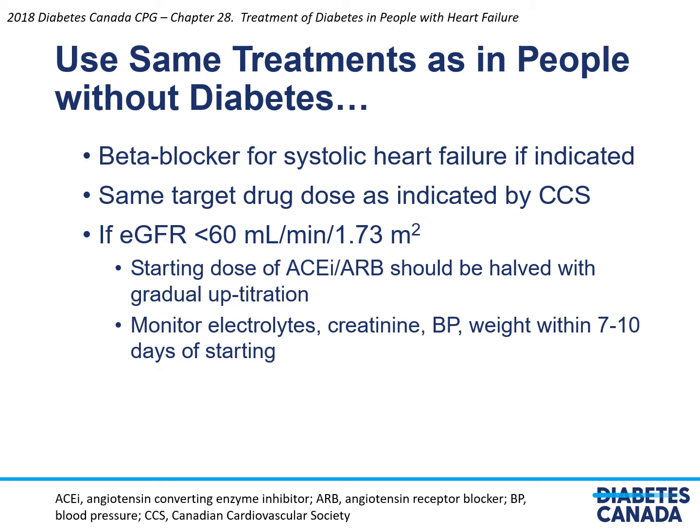Where the eGFR is less than 60 ml/min/m², starting doses of ACE inhibitors or angiotensin II receptor blockers should be halved, with gradual up-titration. One should monitor electrolytes, creatinine, blood pressure, and weight within 7 to 10 days of starting or up-titrating therapy.